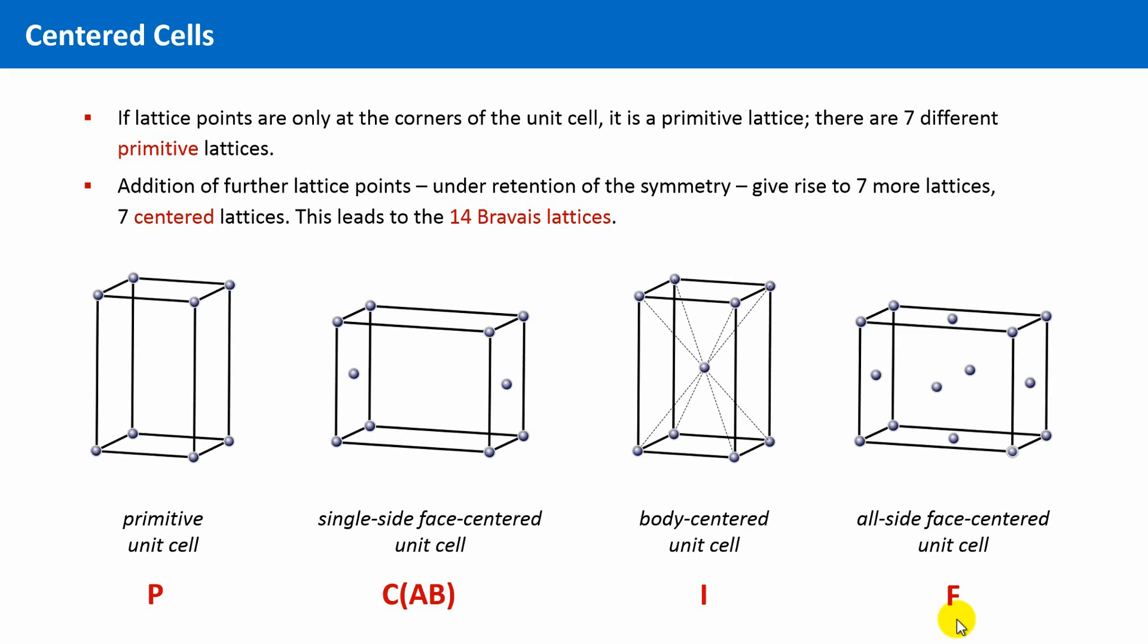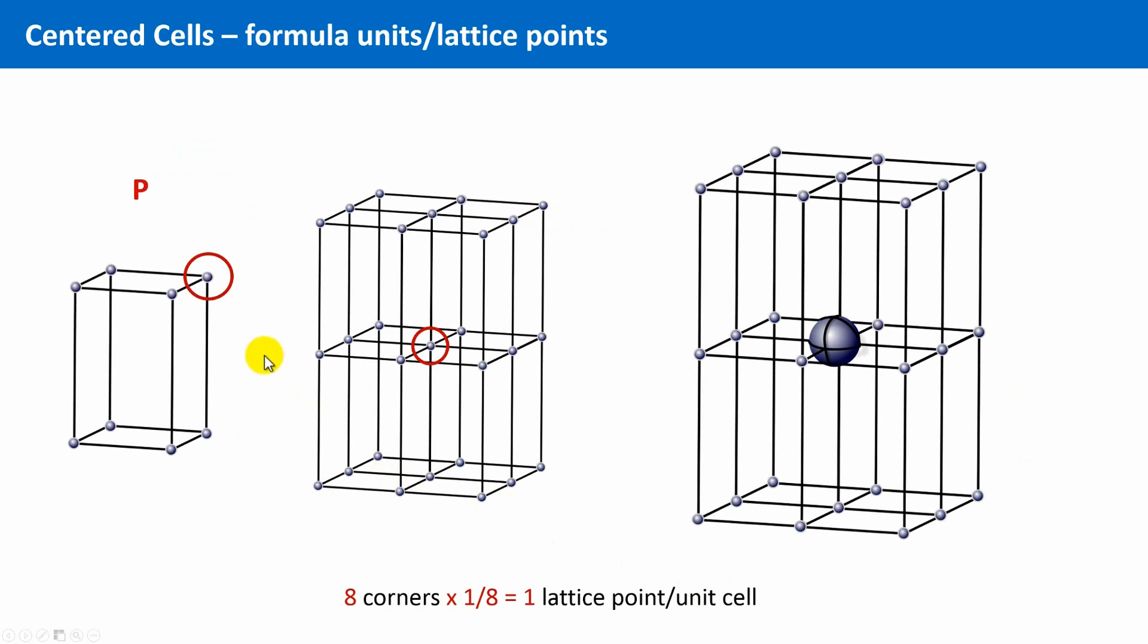Let's now examine how many lattice points belong to one unit cell, depending on the given centering. If we take the primitive unit cell, we have eight lattice points, one at every corner of the unit cell, and every lattice point belongs to eight unit cells simultaneously. This means every lattice point belongs to one-eighth of one unit cell, and eight times one-eighth is equal to one.